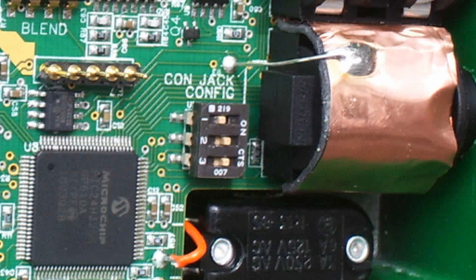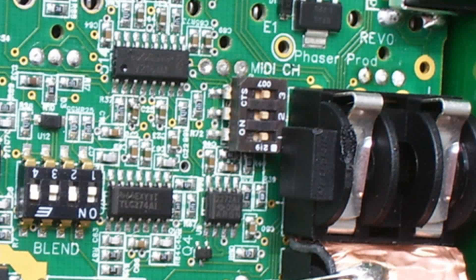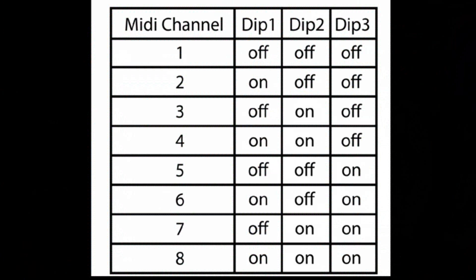Next, we'll set the MIDI dip switch to the channel we'd like to use. We'll use channel 1, which is all switches in the off position. If you'd like to use another channel, here's a chart to help you select it.